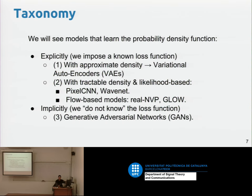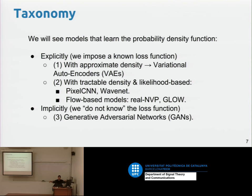The taxonomy was like this: as we're modeling probability distributions P of X, we can do it explicitly — so directly modeling log of P of X in our loss function, as we saw with the VAE, Variational Autoencoders — but we can do it approximately. Inside the explicit category, it can be approximate with some error, or it can be tractable and exact.